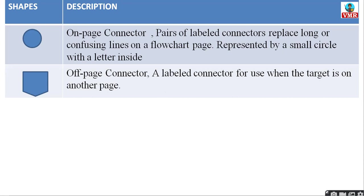If your page is done but your flowchart is not complete, at the end you keep this circle and give it a variable name. On the next page you use an off-page connector with the same variable — it is like a continuation. Similar to writing 'cont'd' at the bottom of a page, for a flowchart you use a circle and off-page connector.